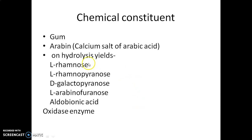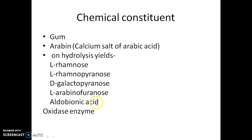The major chemical constituent is gum, which is composed of uronic acid and other sugars. The major chemical present is arabin, which is a chemical salt of arabic acid. On hydrolysis, the gum yields L-rhamnose, rhamnopyranose, galactopyranose, arabinofuranose, and aldoburonic acid. A unique feature of this gum is that it contains an oxidase enzyme.